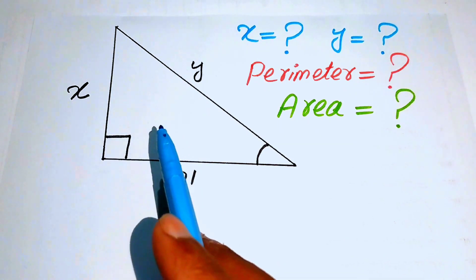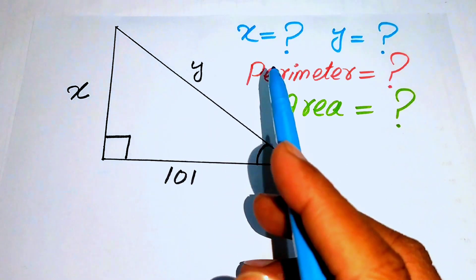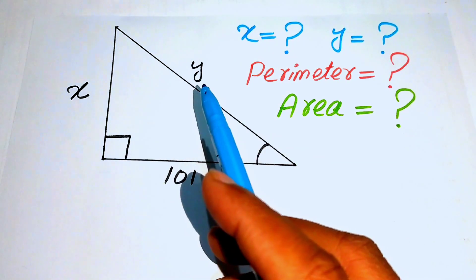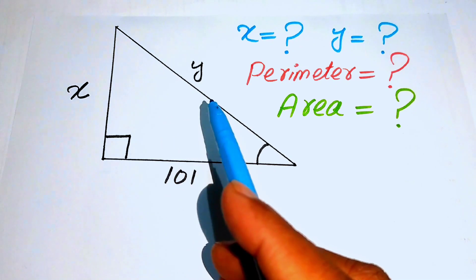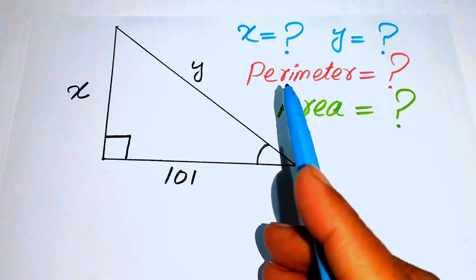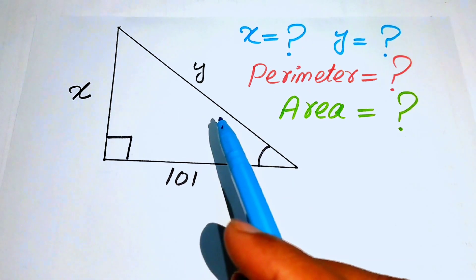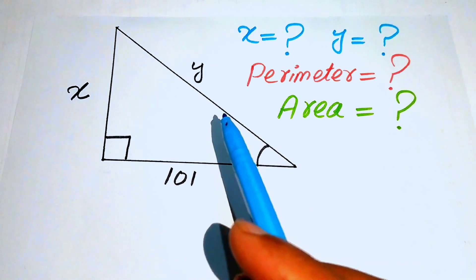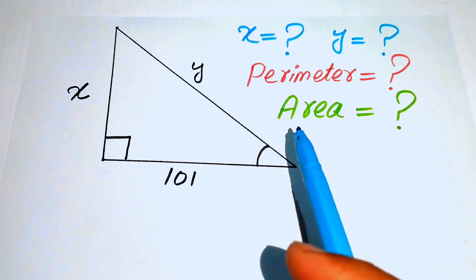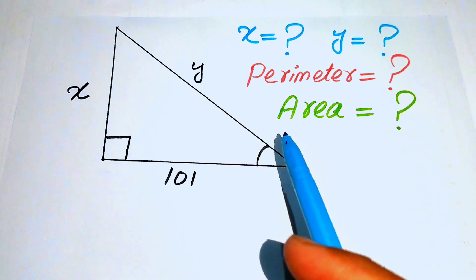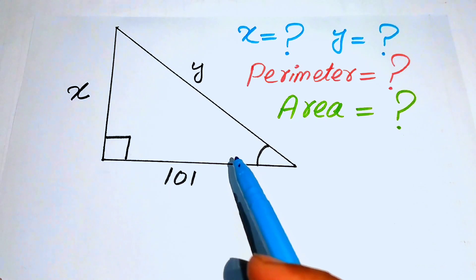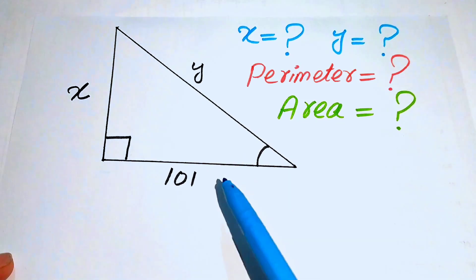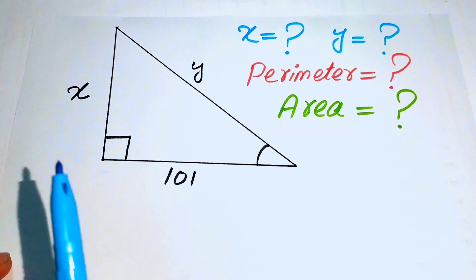We will first find the values of x and y, and after that we will find the perimeter of this triangle as well as the area of this right triangle.